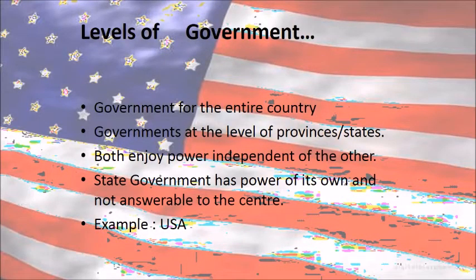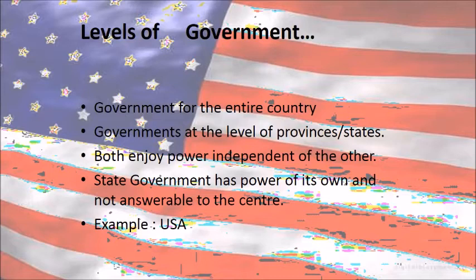There are countries which have only one level of government, and there are countries which have two levels of government. We studied about Belgium, where there was a third setup of government. There can be government for the entire country and government at the level of the provinces or states, and both different levels enjoy independent power. The state government has power of its own and is not answerable to the center — this type of government is practiced in the United States of America.